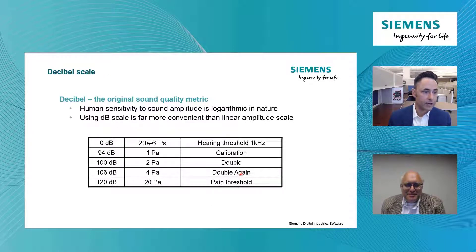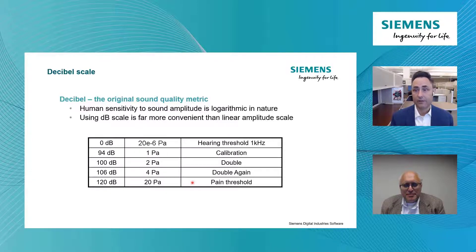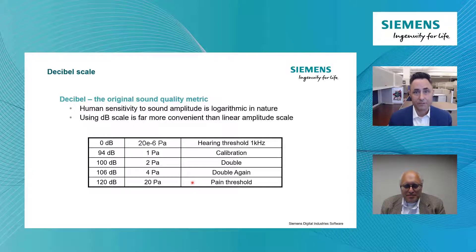If we look at this conversion for decibels, we call it sort of the original sound quality metric. Sound quality metrics are trying to make sound and the qualities of sound — like amplitude or frequency — more convenient for human beings to use. The decibel takes that awkward pascal scale for human hearing and converts it to something much more convenient that matches our perception. That's why we use decibels.